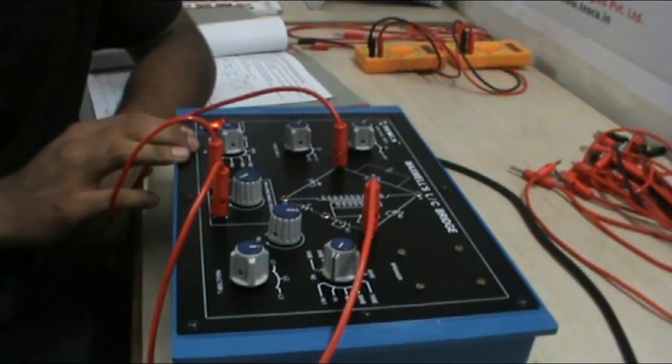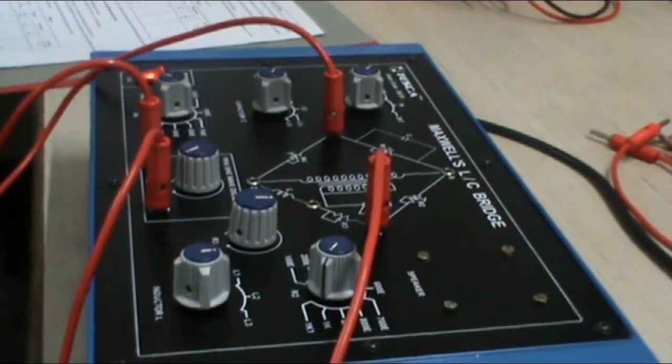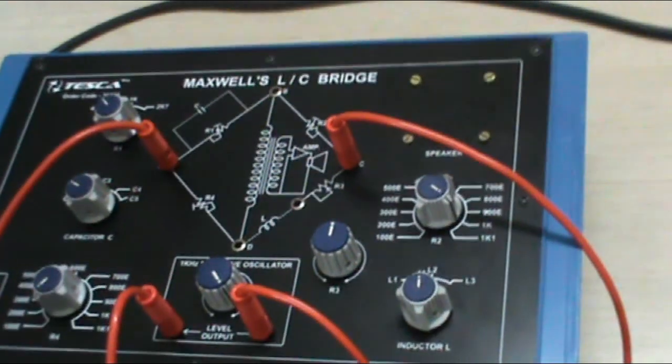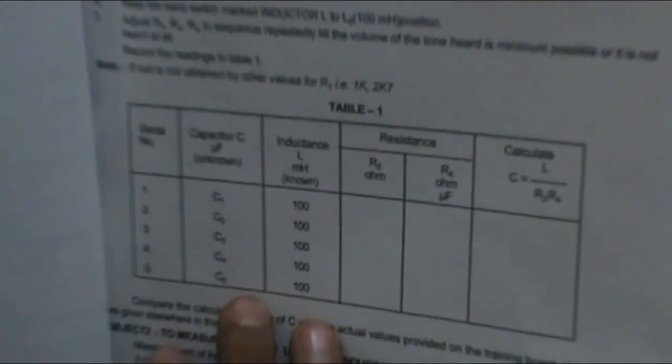So we can measure the different values of R1, R2, R3 and R4. Through this we can vary this experiment by taking different values of C1, C2, C3, C4, C5.